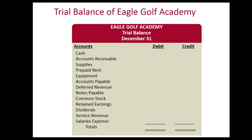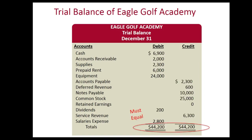We're going to take the account balances from the general ledger that we've worked on with Eagle Company to prepare a trial balance of the Eagle Golf Academy. We're listing the balances of the debit accounts in the debit column and the balances of the credit accounts in the credit column. The total of the debit column will equal the total of the credit column because our accounting equation — assets equal liabilities plus owner's equity — is always accurate.